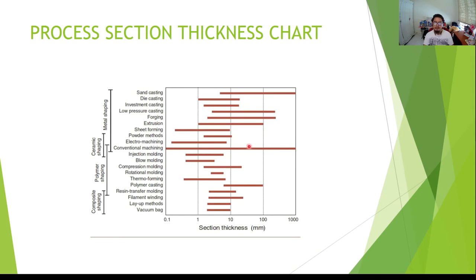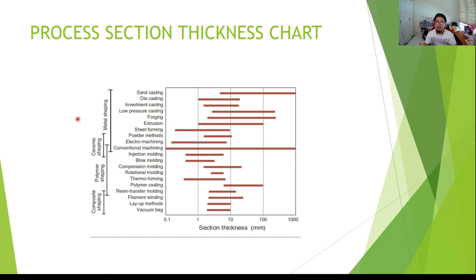The section thickness matrix shows limitations by process and material. For metal sand casting, the minimum section thickness is about 7 mm, with a maximum of around 1 meter. Rotational molding has a very limited range, roughly 4 mm to 9 mm. For ceramics, only powder methods up to injection molding are applicable — other methods like vacuum bagging are used. This chart guides you in choosing the process based on your required section thickness.